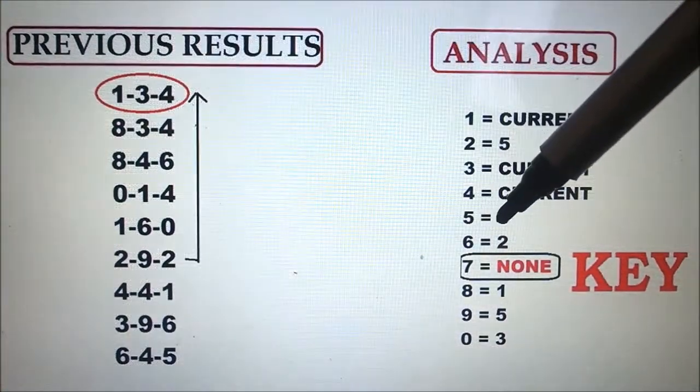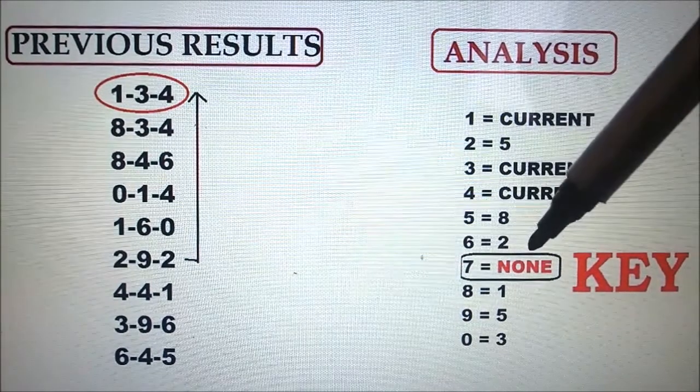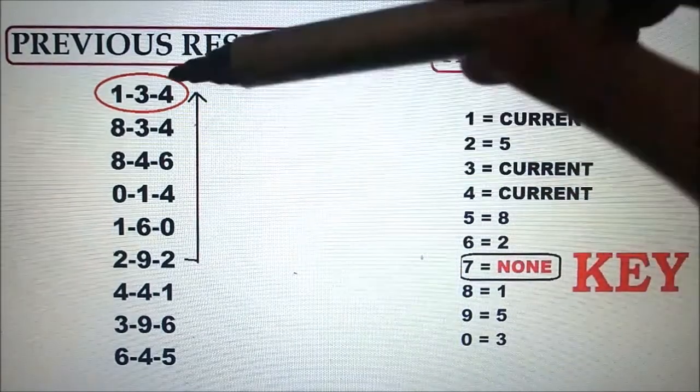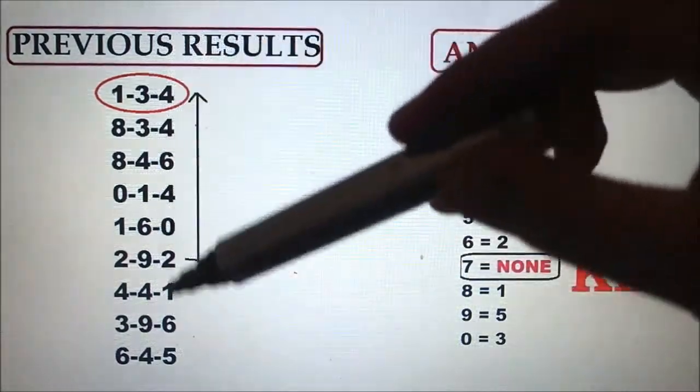So five, eight. Six, two. Seven, none. So this is the key. The key is always not present on the previous draw.